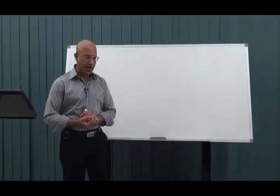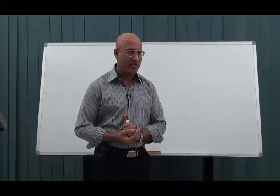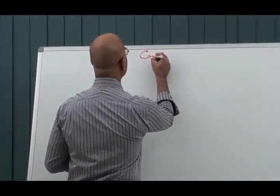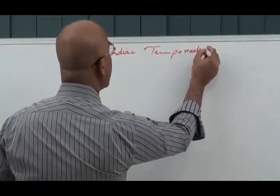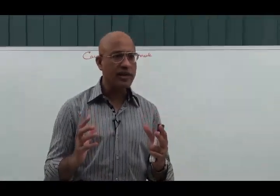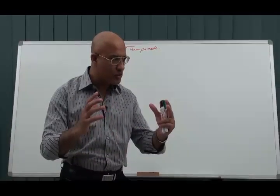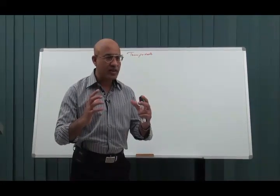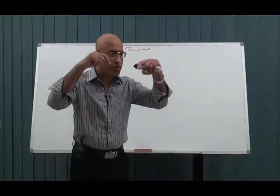Today we are going to talk about cardiac tamponade. We already had a detailed lecture on acute pericarditis, and now we will talk about cardiac tamponade. Cardiac tamponade is the condition in which fluid is accumulated in the pericardial sac under pressure. This pericardial effusion exerts so much pressure on the cardiac chambers that it obstructs the inflow of blood to the heart.